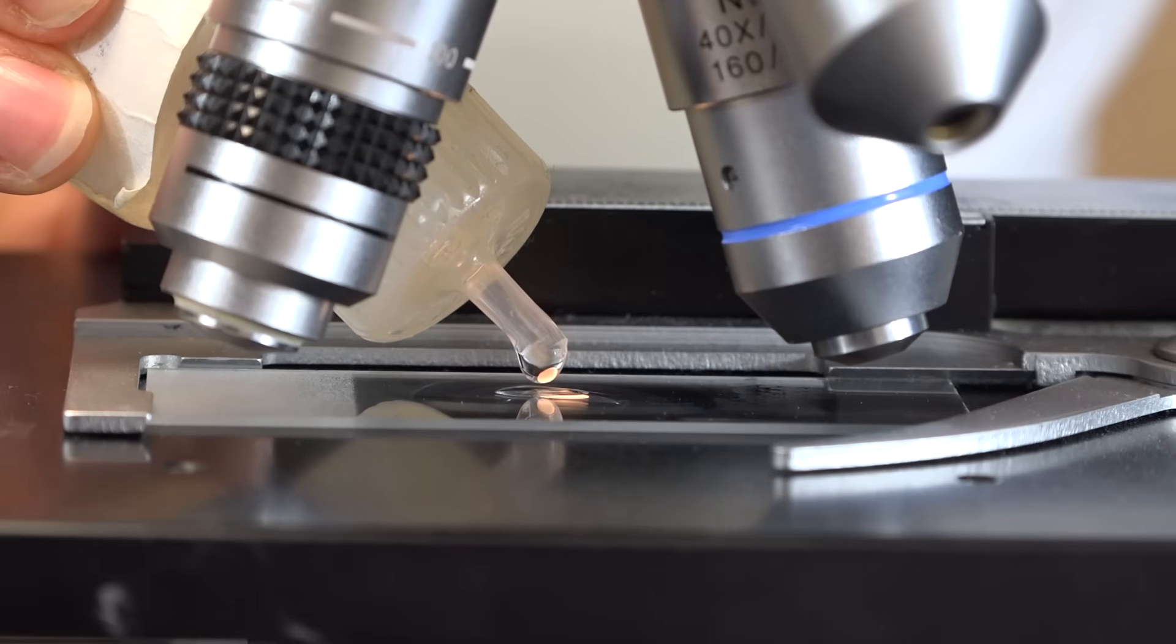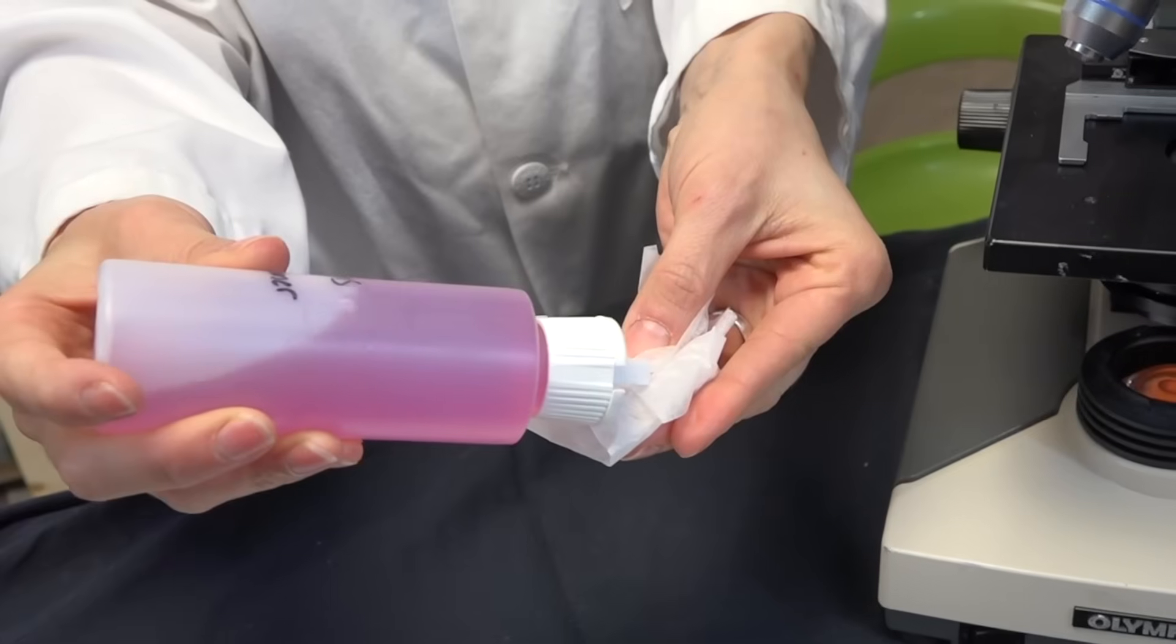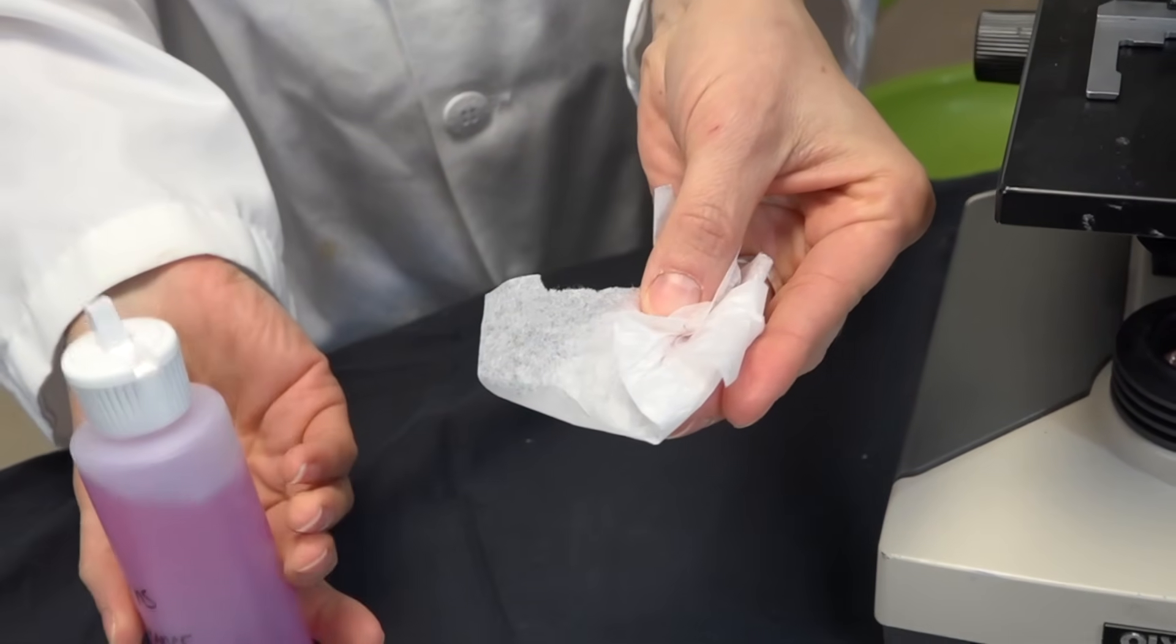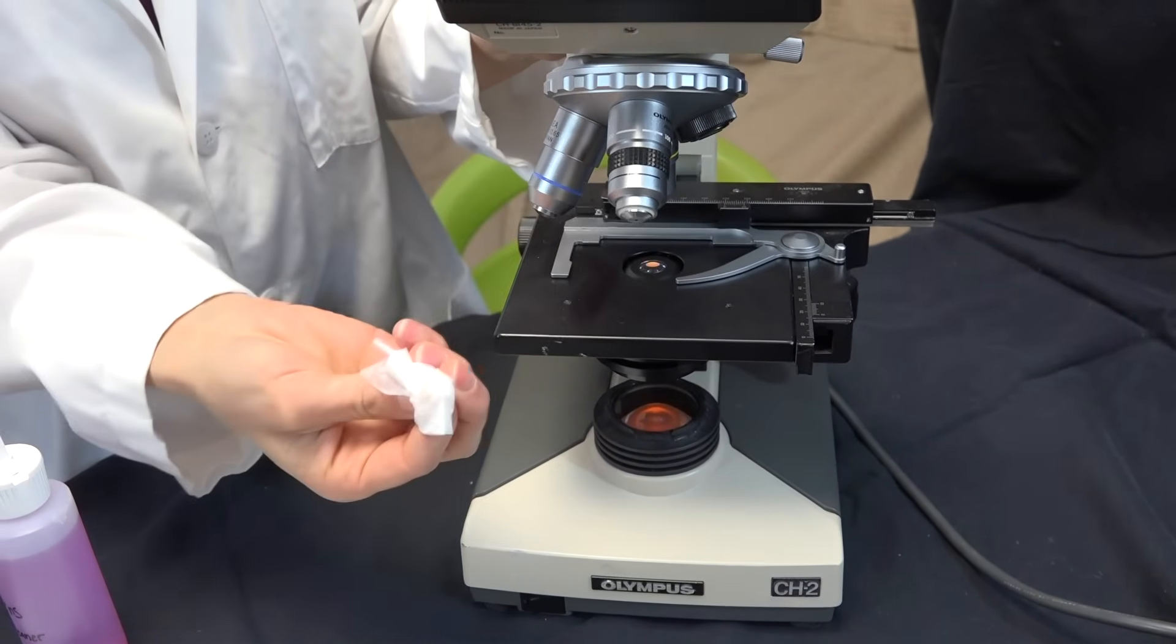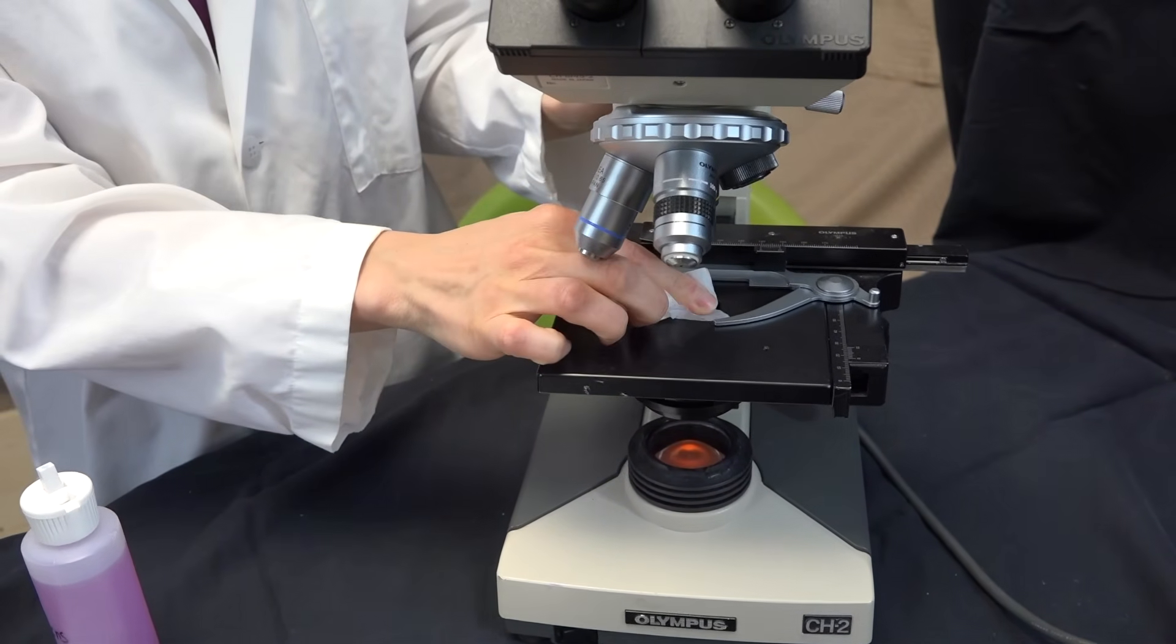If you've used oil on your microscope you want to use lens cleaner to clean off any oil. Just put a couple drops on your paper and rub to remove any oil. If necessary you can also wipe the condenser.